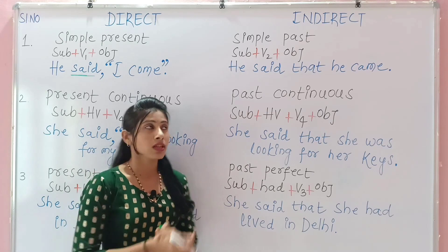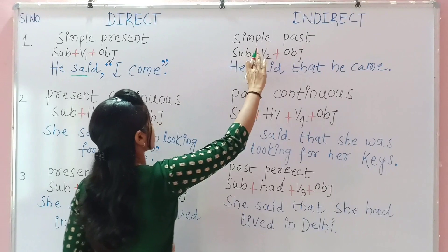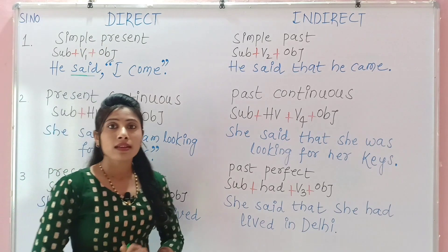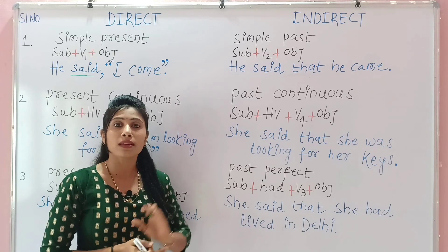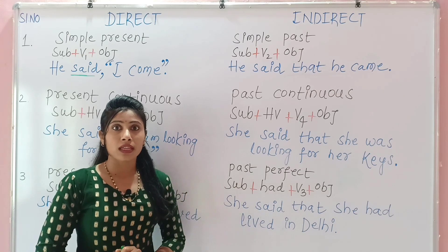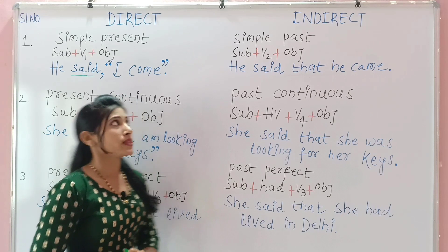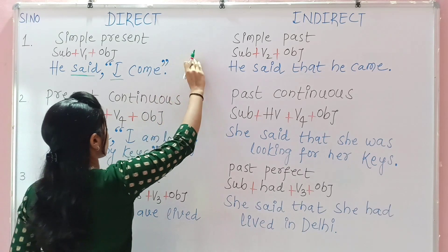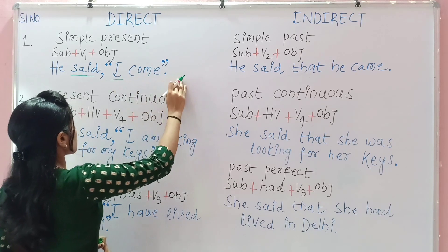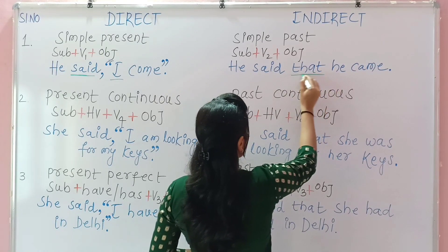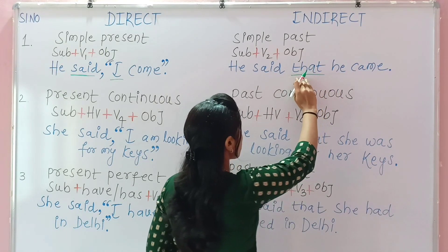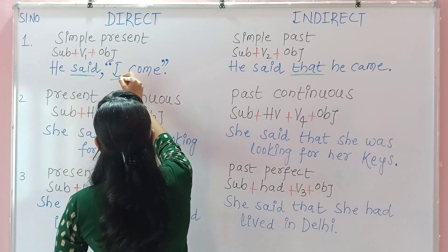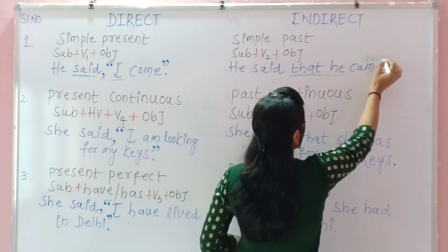Now let us see how the tenses are changed. The first one is: simple present becomes simple past in indirect speech. The formula for simple present tense is subject + V1 + object, where V1 is the main verb expressing the state or action of the subject. For example: 'He said, I come.' Here 'I' is the subject and 'come' is V1. In indirect speech, the first person pronoun changes to third person, and V1 changes to V2. So: 'He said that he came.'